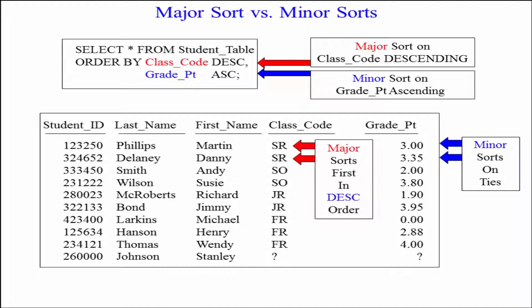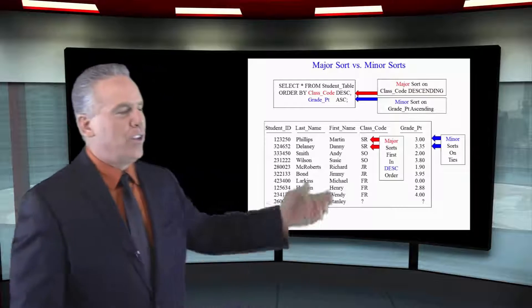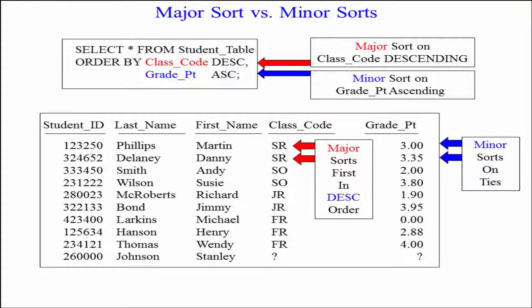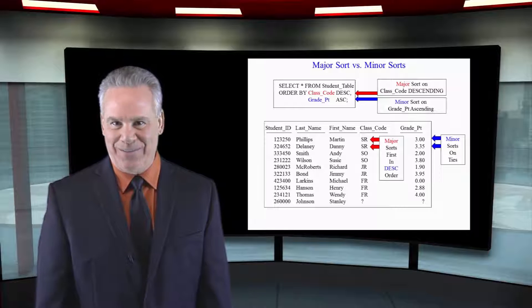Those rows won't change unless there's a tie. As you can see, the two seniors are tied, so those rows will take the next sort, which is the minor sort, and it's going to sort by grade point ascending. The 3.0 is going to be first, and the 3.35 is going to be second. That's a major and minor sort.